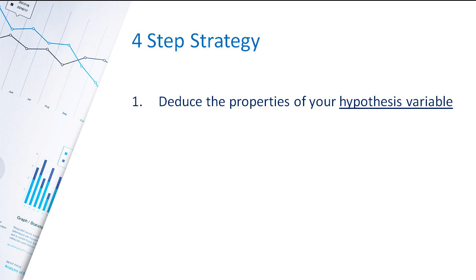Okay, the very first step that you need to do is you need to deduce the properties of your hypothesis variable, and I'm going to go through exactly what properties there are that you need to work out. After that, you need to deduce the properties of your predictive variable. Now, as it turns out, the properties of each of these two variables are the same ones, so you usually do these two steps together. Steps one and two go together.